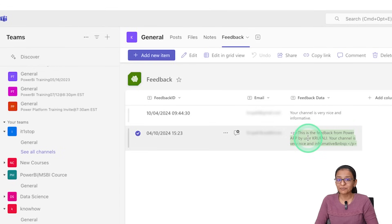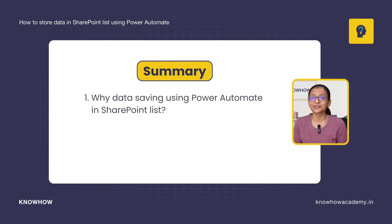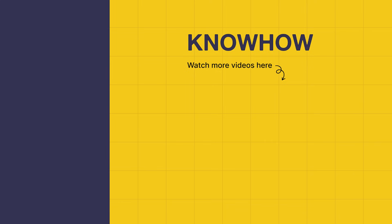So this is how you can insert data into a SharePoint list when new feedback is submitted using Power Automate. To summarize what you learned: first, why you should use Power Automate to insert data into SharePoint; second, how to insert data into a SharePoint list using Power Automate with two different scenarios. Thank you for choosing KnowHow Academy as your source of IT knowledge. If you have any questions, don't hesitate to reach out. Stay curious and keep learning.